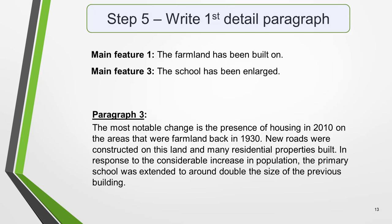Paragraphs 3 and 4 of your map essay are where you include more detailed information. In paragraph 3, you should give evidence to support your first one or two key features. Main features 1 and 3 are closely related, so we'll write about these two together. Here's an example of what you could write: 'The most notable change is the presence of housing in 2010 on the areas that were farmland back in 1930. New roads were constructed on this land, and many residential properties built. In response to the considerable increase in population, the primary school was extended to around double the size of the previous building.'